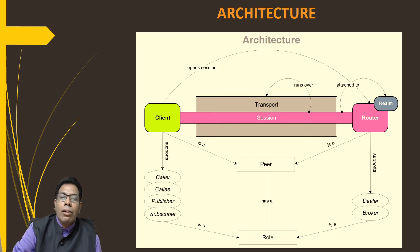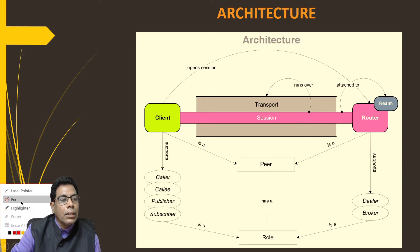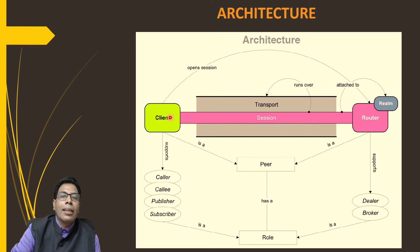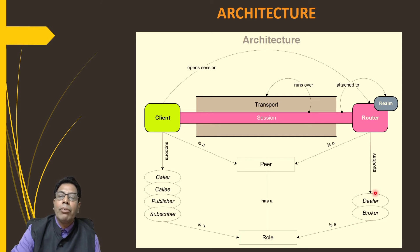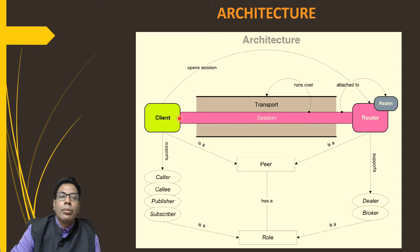Looking at the architecture, we have the client and the router — these two are the peers. The client can have different roles: caller, callee, publisher, and subscriber. The router has two roles: dealer and broker. The session runs over the transport, with messages flowing between client and router.